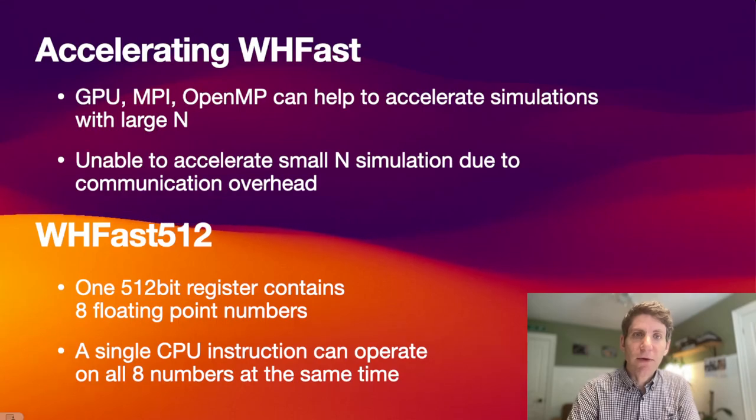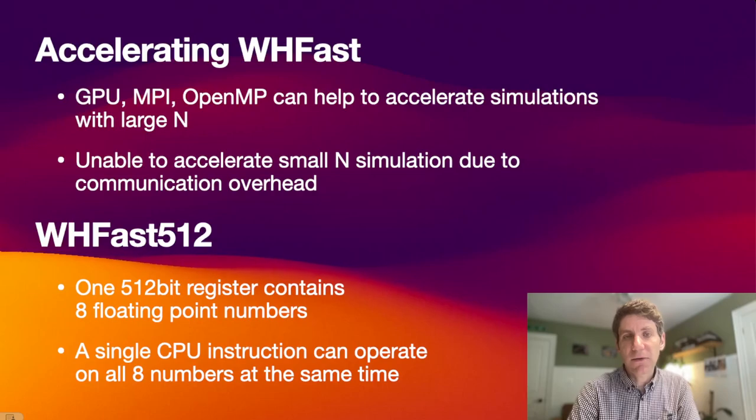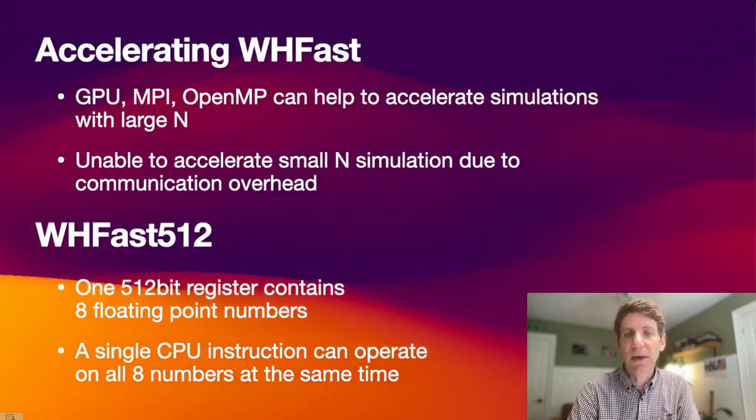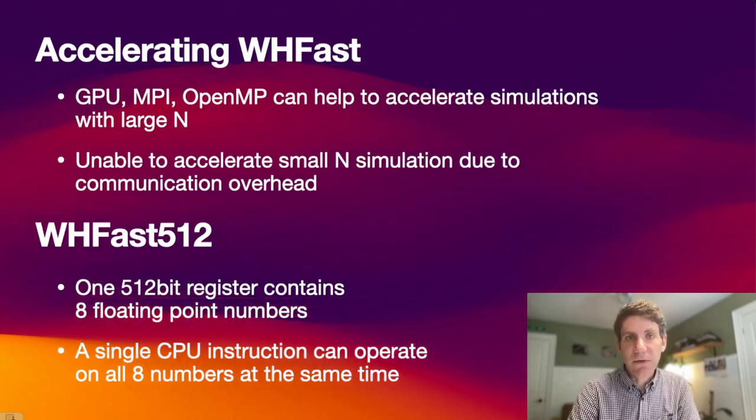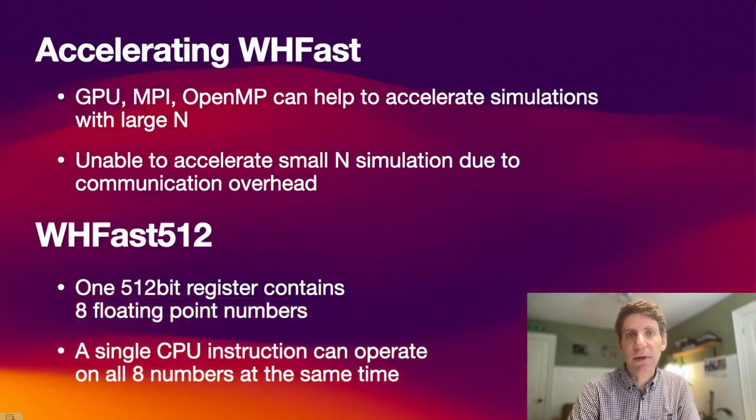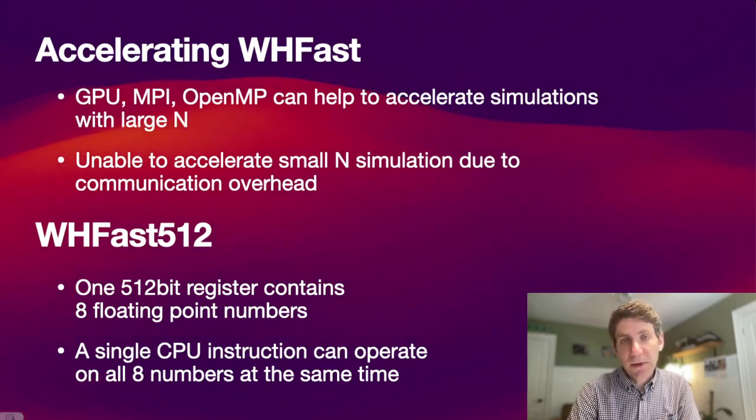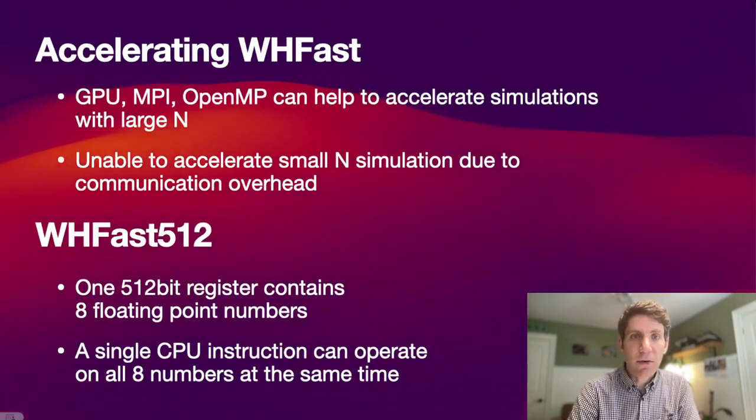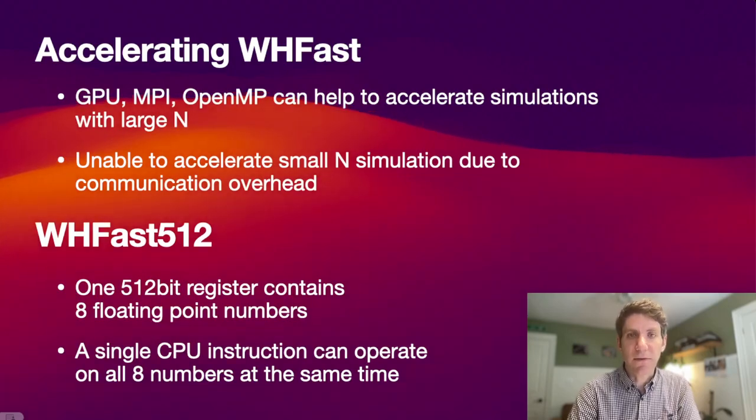What WHFAST-512 does, on the other hand, is different. It uses the fact that on these systems with AVX-512, we have registers that are 512-bit wide. In these registers, we can fit in eight floating-point numbers. Then, using the AVX-512 instructions, we can use one CPU instruction to operate on all those eight floating-point numbers at the same time, and therefore, in principle, achieve a speedup of about a factor of 8.